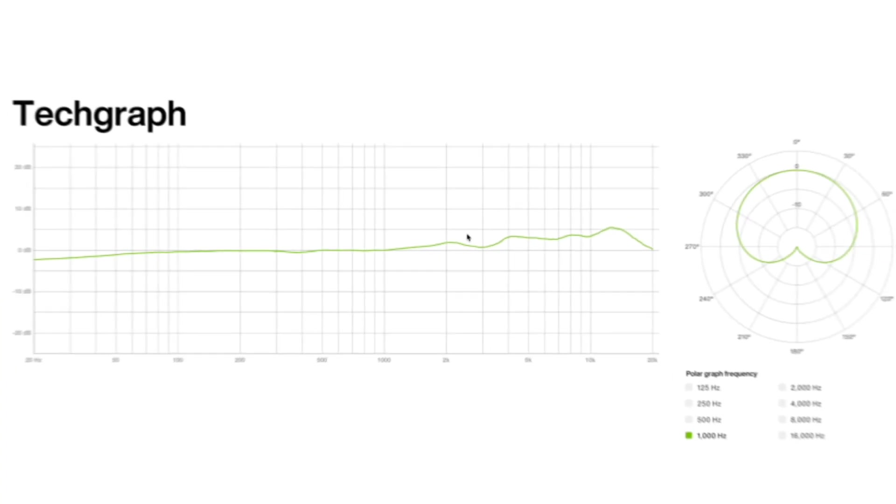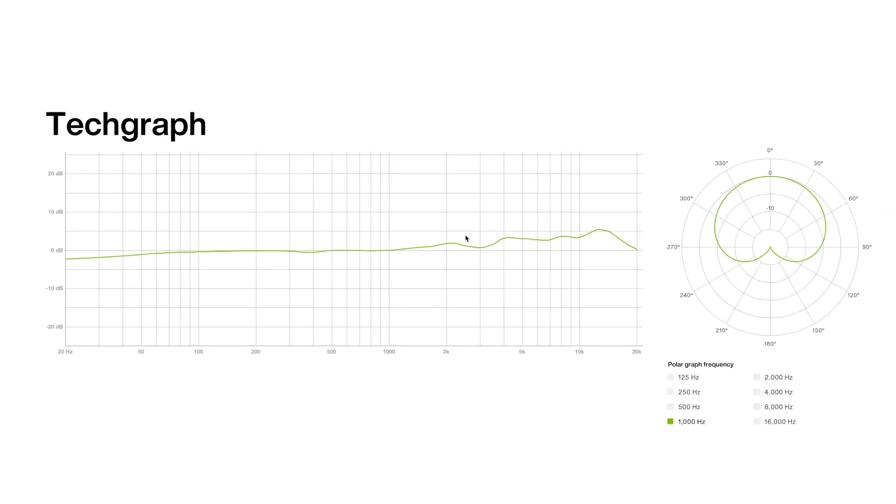There are two more things that are directly linked to sensitivity: the frequency response and the polar pattern. The polar graph tells you the sensitivity at certain frequencies for different angles. One might forget this because we tend to just look at the one kilohertz polar graph — but there is more to a polar pattern than just the one kilohertz reading.